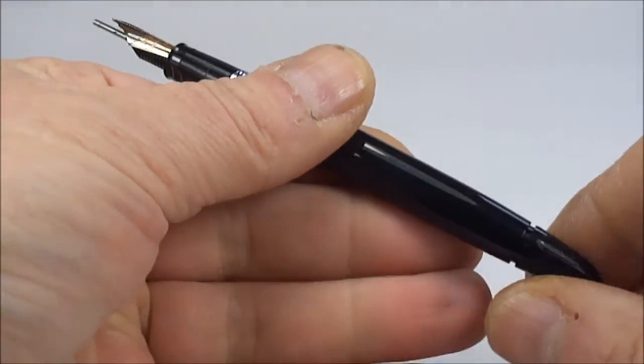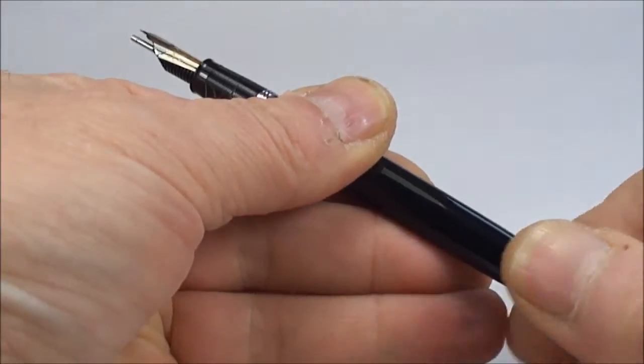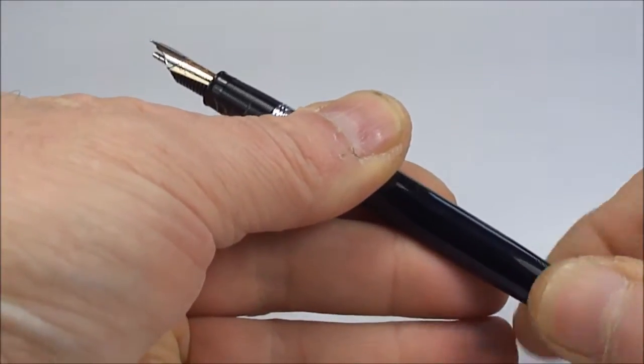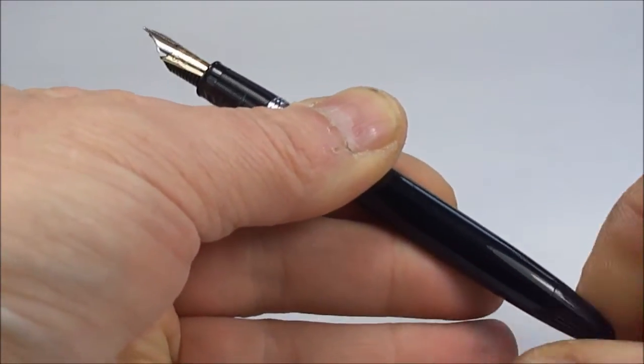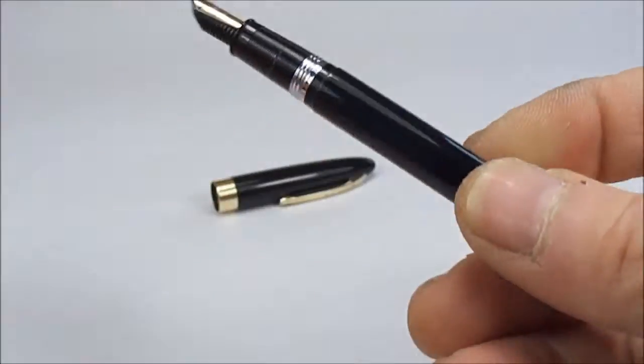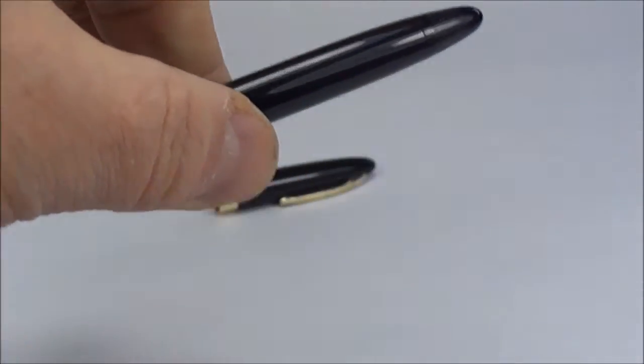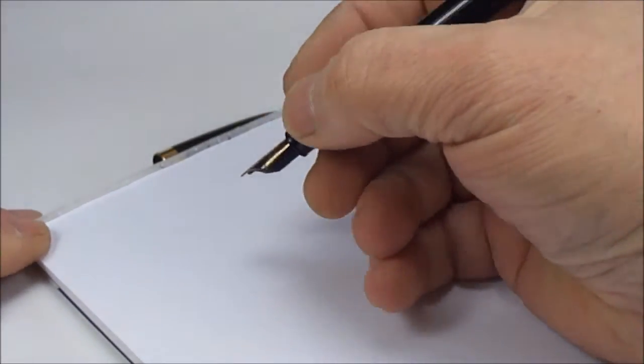And then what we do now, we just simply turn the knob to the end there and you can see the snorkel retracts back into the feed. So what we'll do now is bring on our little pad and let's have a try at writing.